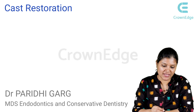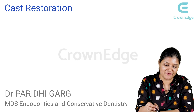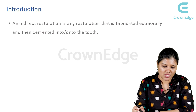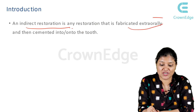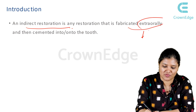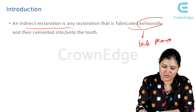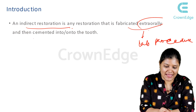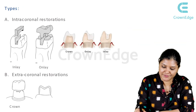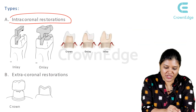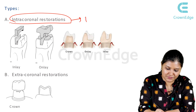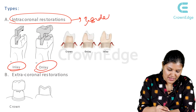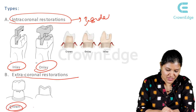Hi students, I am Dr. Paridhigarh and today we will be discussing about cavity preparations of cast metal restorations. Basically, it is an indirect restoration that is fabricated extraorally — there is a lab procedure which is required and then cemented onto the tooth structure. There are intracoronal restorations which are placed inside the tooth like inlay, onlay, and extracoronal restorations like crown.